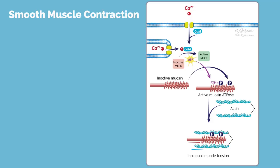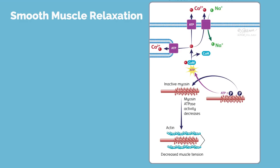On a cellular level, smooth muscle contraction is mediated by an increase in intracellular cytoplasmic calcium. This activates myosin light chain kinase, which catalyzes the phosphorylation of light chain myosin. Phosphorylated myosin interacts with actin and activates ATPase. ATP hydrolysis by ATPase generates force and the muscle contracts. Smooth muscle relaxation begins with the sequestration of calcium in the sarcoplasmic reticulum, dephosphorylation of myosin light chain by phosphatase, and inactivation of myosin light chain kinase.